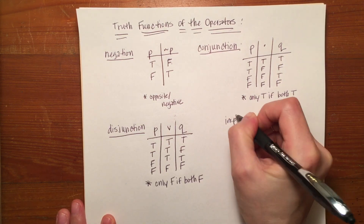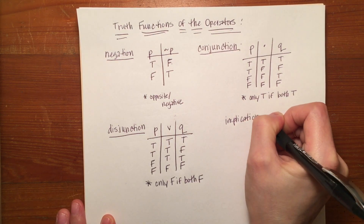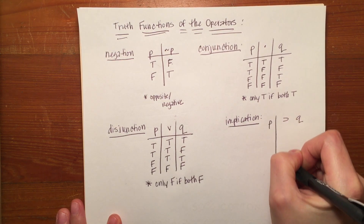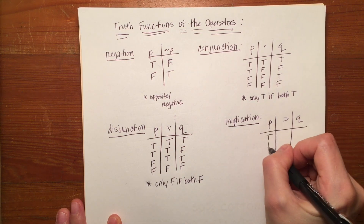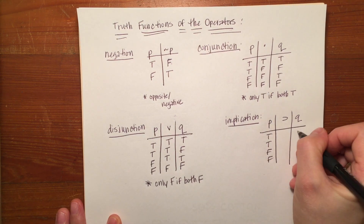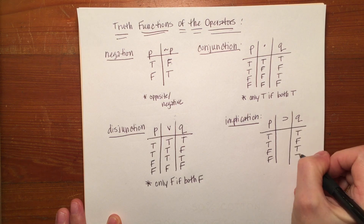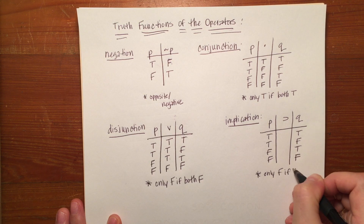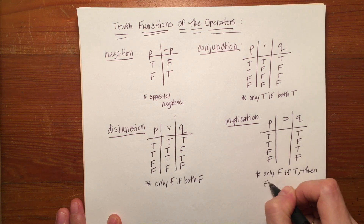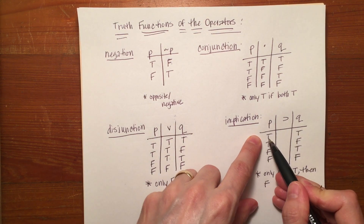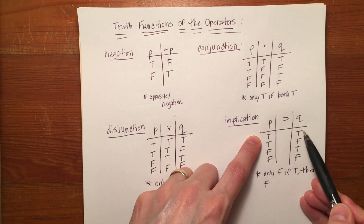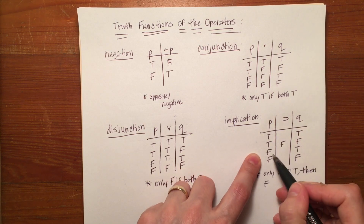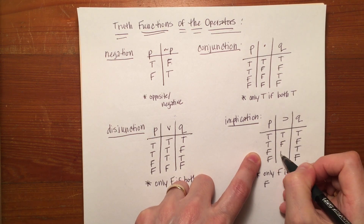With implication, the rule is it's only false if true then false — meaning if it's true on the left and false on the right. So true-true is true; true-false is false. The rest are true by process of elimination.